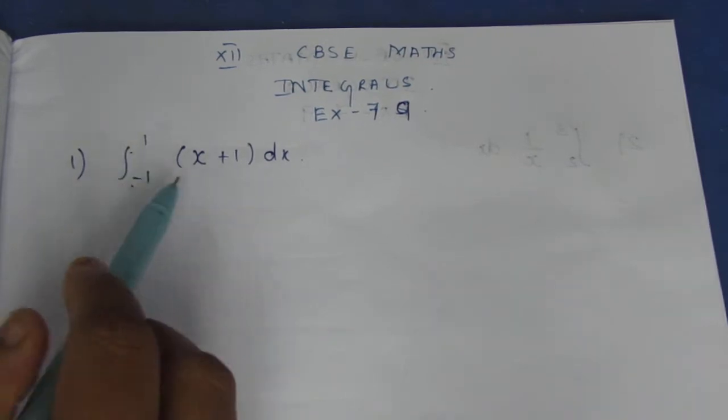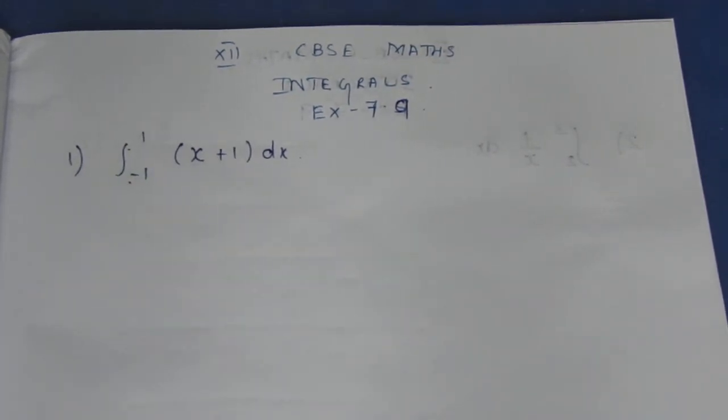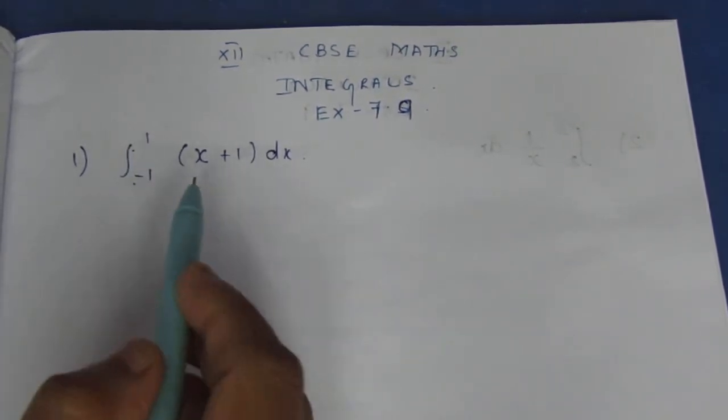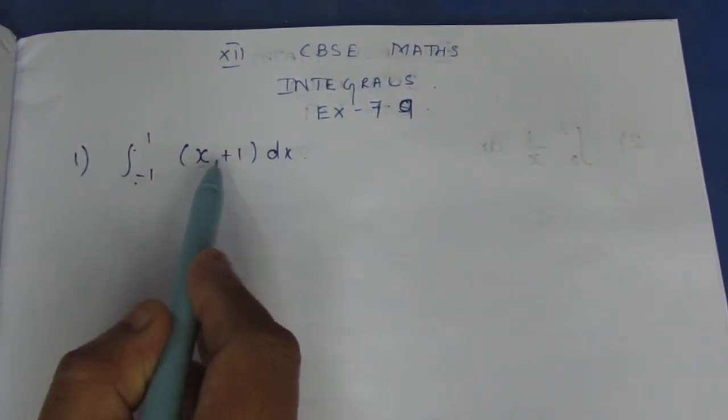Integrate from minus 1 to 1, (x+1) dx. Here they have given integration with the values, that is an upper value and a lower value. We need to integrate x plus 1.